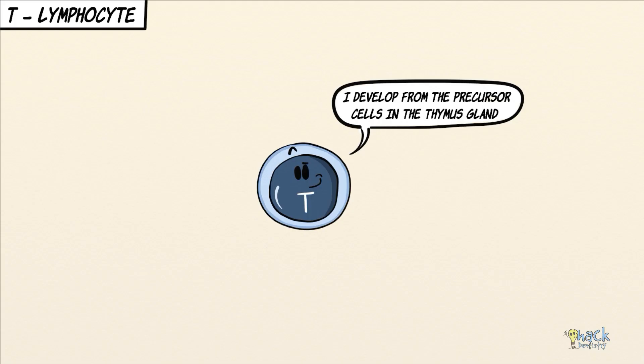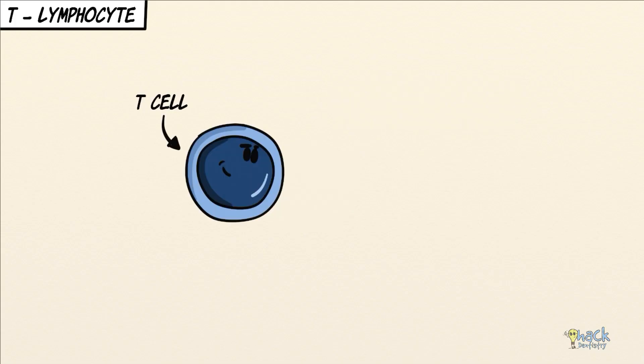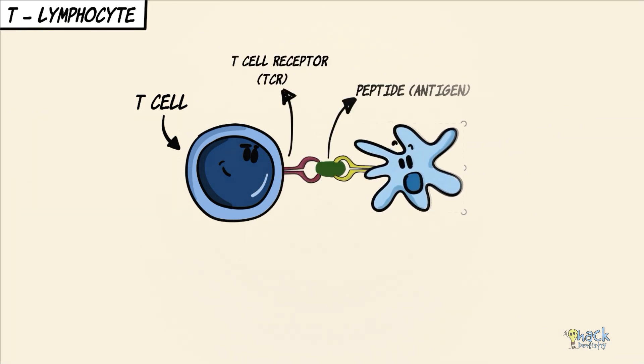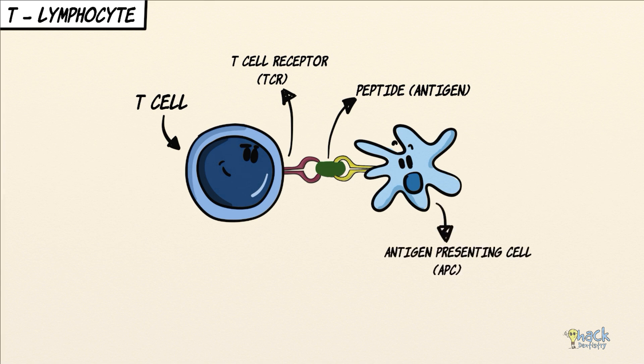T lymphocytes develop from precursor cells in the thymus. A T cell possesses a T cell receptor that helps recognize peptides or antigens displayed by antigen presenting cells.